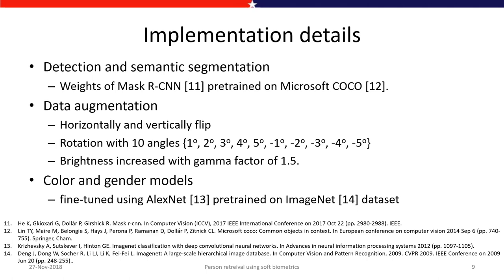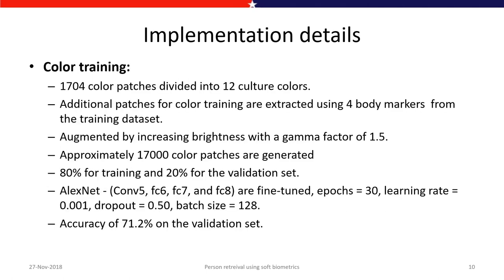For color model training, 1,704 color patches are divided into 12 culture colors provided in the dataset. Additional patches are extracted from body markers given in the dataset. The dataset was augmented using brightness with a gamma factor of 1.5 to handle illumination changes, generating approximately 17,000 color patches. LXNet was fine-tuned with the last four layers over 30 epochs, with a learning rate of 0.001, dropout of 0.5, and batch size of 128. Validation accuracy for the color model was 71.2 percent.